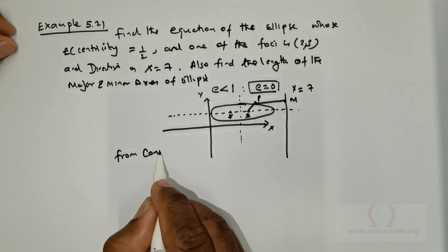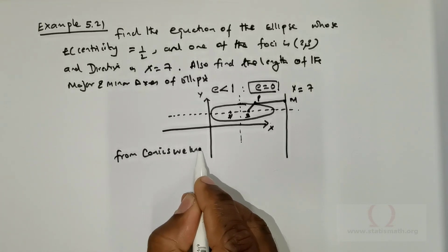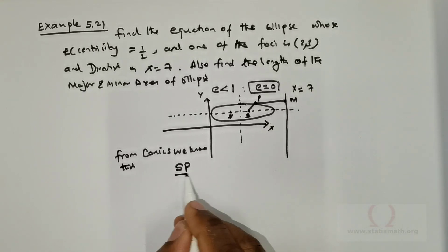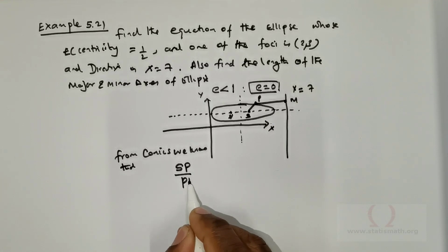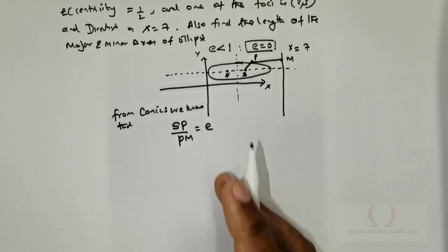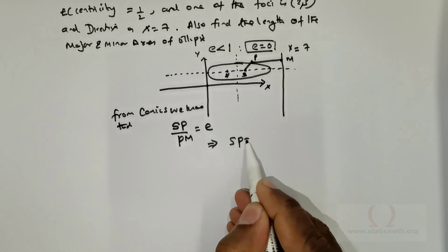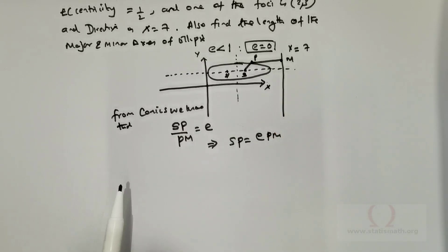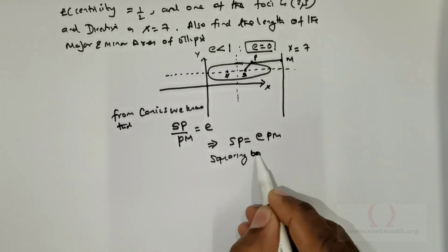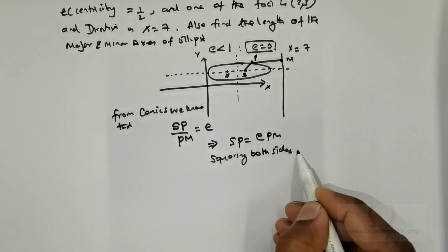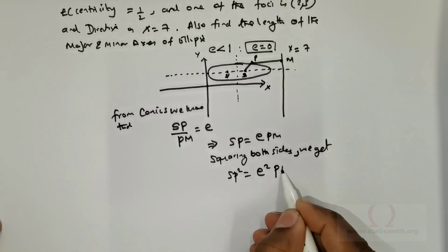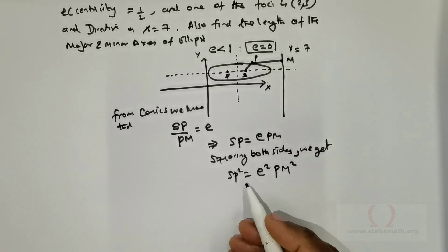From conics we know that SP divided by PM is the eccentricity. This can be rewritten as SP = e × PM. Squaring both sides, we get SP² = e² × PM².